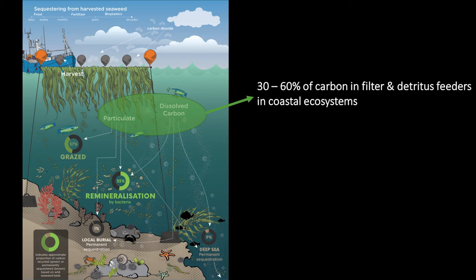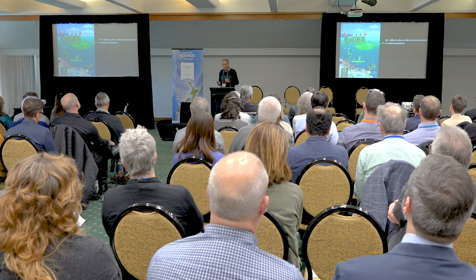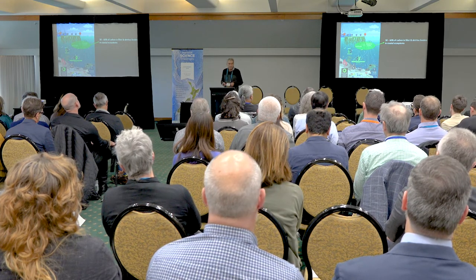If you look at the studies around the world, especially those done in temperate regions, the carbon coming from seaweeds is really important in terms of driving coastal ecosystems. Around 30 to up to 60 or even 80% in some cases of the carbon found in subsequent trophic consumers — such as filter feeding shellfish, detrital feeders, things like sea cucumbers, worms on the seafloor — are relying to a huge extent on the carbon being released in various forms from seaweed. So seaweeds have an important role, and increasing that carbon supply, including from aquaculture, is something significant and worth having a look at.